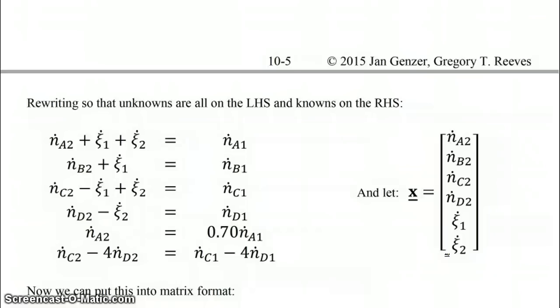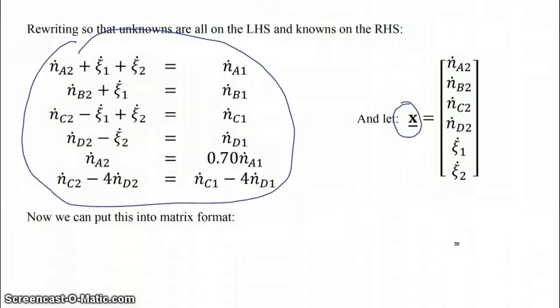And so here are our equations, and we're going to let this vector X of our unknowns be the unknowns in this order, so N dot A2 through D2, and then ξ1 and ξ2. Now we can then put these equations into matrix format.